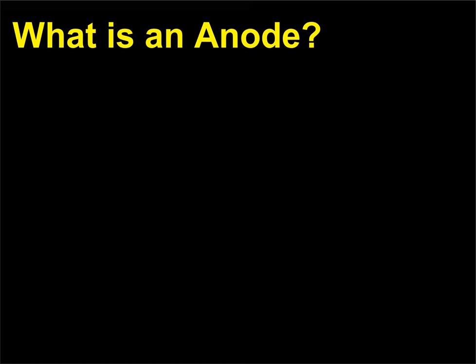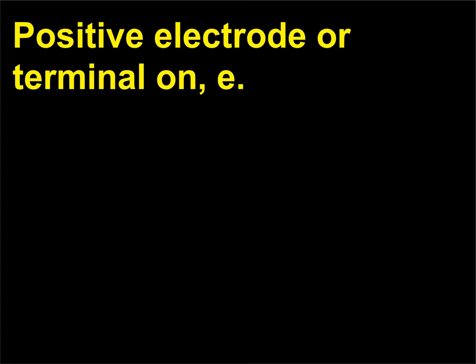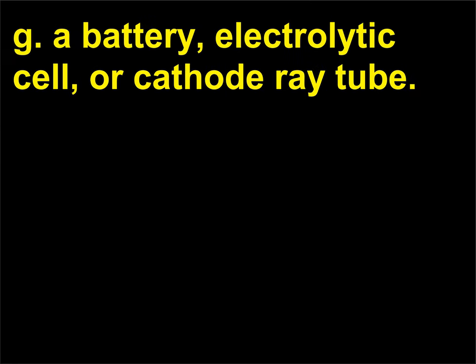What is an anode? An anode is the positive electrode or terminal on a battery, electrolytic cell, or cathode ray tube.